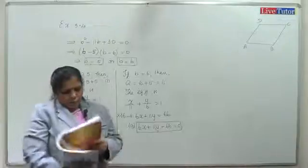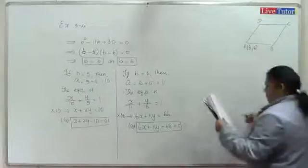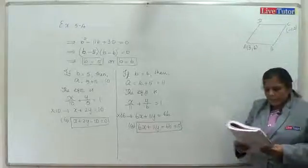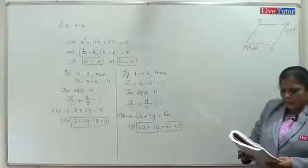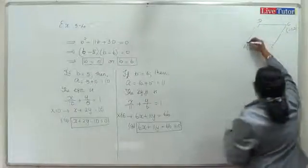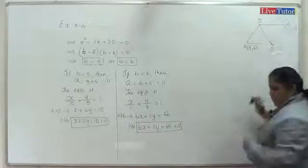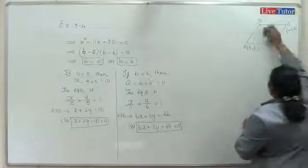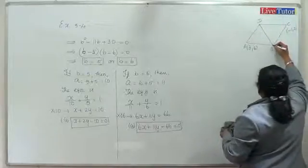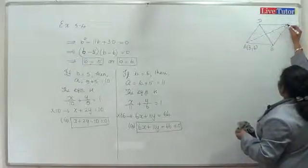Question 19: A(3, 6) and C(-1, 2) are two vertices of a rhombus ABCD. Find the equation of the straight line that lies along the diagonal BD. We know that diagonal BD is perpendicular to diagonal AC.